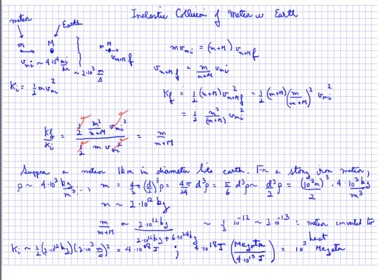Let's put some numbers in. Suppose we have a meteor that is one kilometer in diameter hitting the Earth, and assume it's a stony-iron meteor with a density of 4,000 kilograms per cubic meter — about four times the density of water. We can calculate the mass as its volume, four-thirds pi r cubed, with r equal to diameter divided by 2, times the density. This simplifies to pi over 6 times d cubed times rho. Since pi over 6 is roughly one half, the mass is approximately diameter cubed divided by 2 times the density.